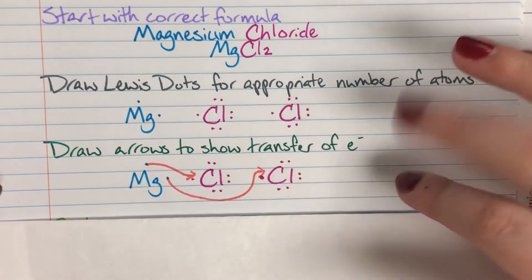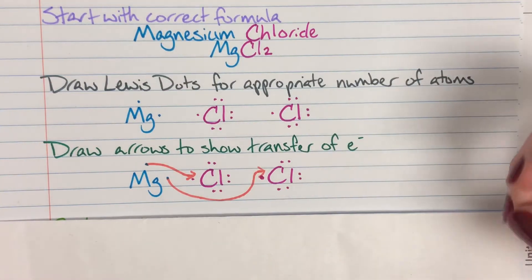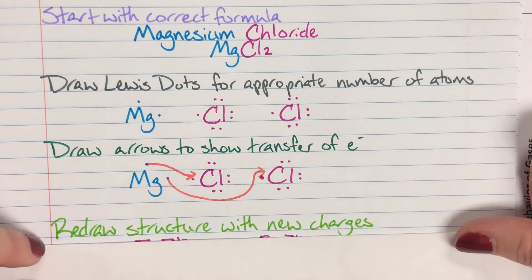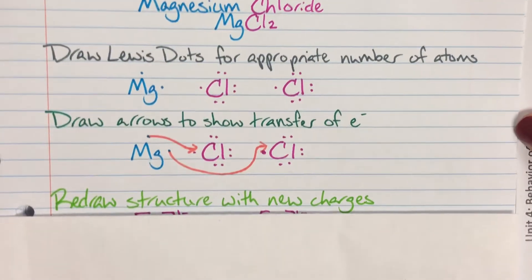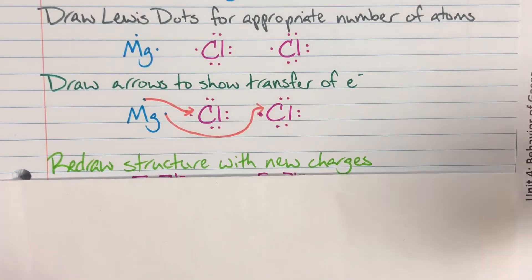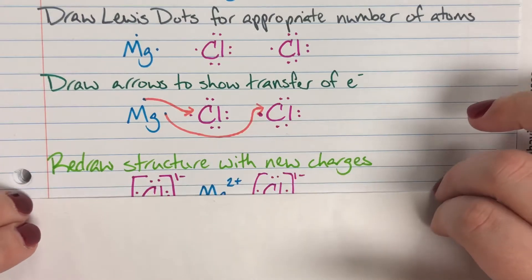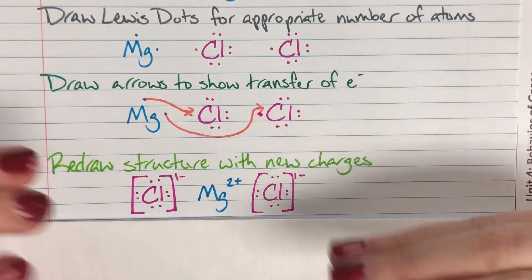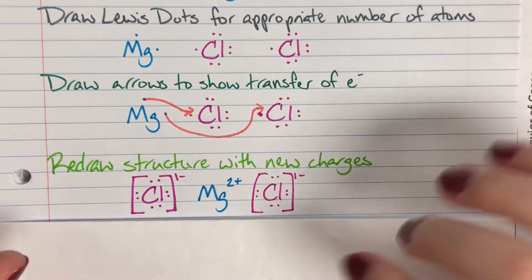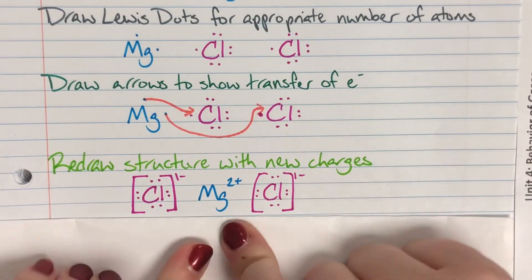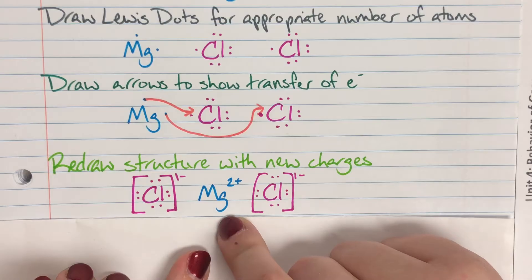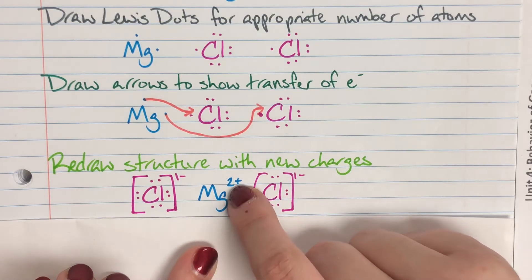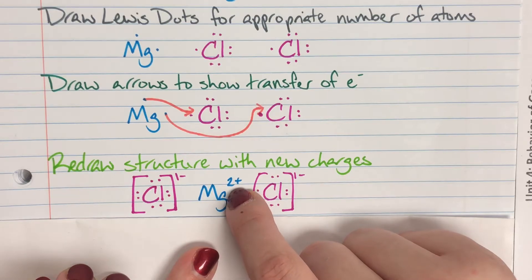Now that I have shown the symbolic transfer of those electrons with full arrows, I'm going to go ahead and redraw my structure with my new charges, with the new homes of those electrons, and we're going to see what that looks like. So magnesium gave away its electrons completely, so I have redrawn magnesium with no dots around it. I have also reflected that magnesium gave away two valence electrons by giving magnesium a charge of positive two.